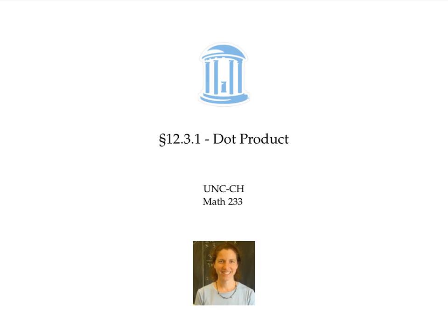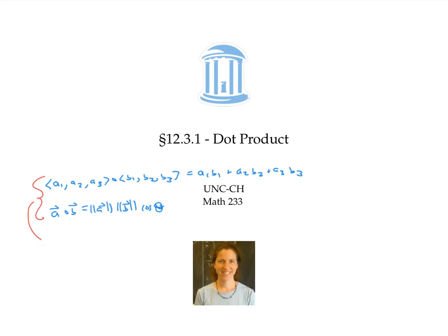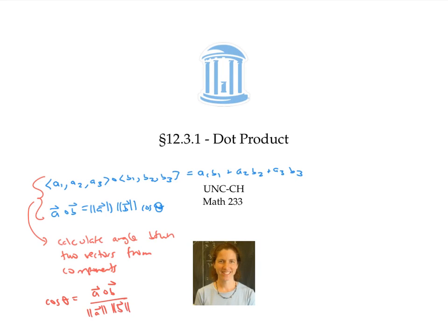In this video, we saw two different definitions of dot product — one in terms of components, and another in terms of magnitudes and angles. Both definitions together give a handy way of calculating the angle between two vectors when all you know is the components: use the geometric definition to express cosine theta in terms of the dot product and lengths, then use the component definition to calculate the dot product. You may wonder whether these two definitions are actually equivalent — and yes, they are. To see a justification based on the law of cosines, watch the next video.